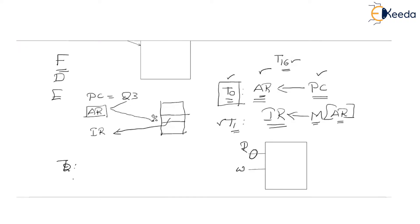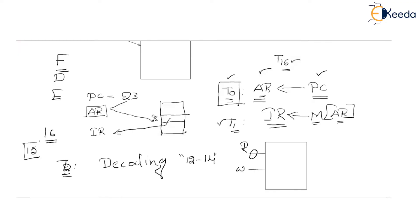In T2, the decoding phase begins. During the decoding phase, the instruction opcode will get interpreted, and after interpreting the opcode, the computer system will be able to understand what operation is to be performed. The control unit is going to decode the opcode. The opcode in our instruction is in bits 12 to 14 — total instruction is 16 bits, in which the most significant 15th bit is for mode, and bits 14, 13, 12 are the three opcode bits. The control unit decodes these three bits and also the mode bit.